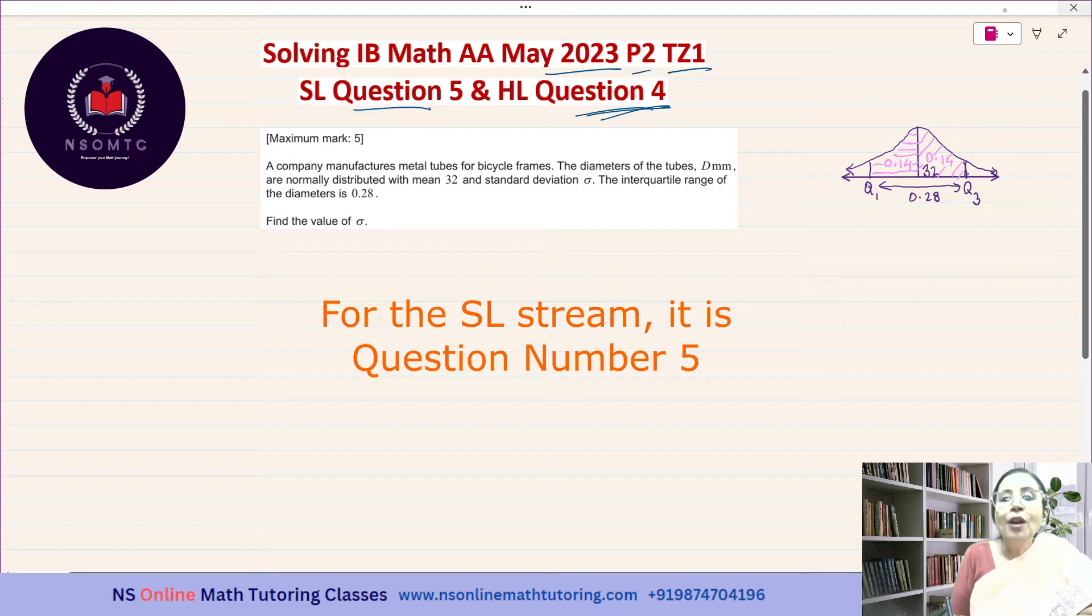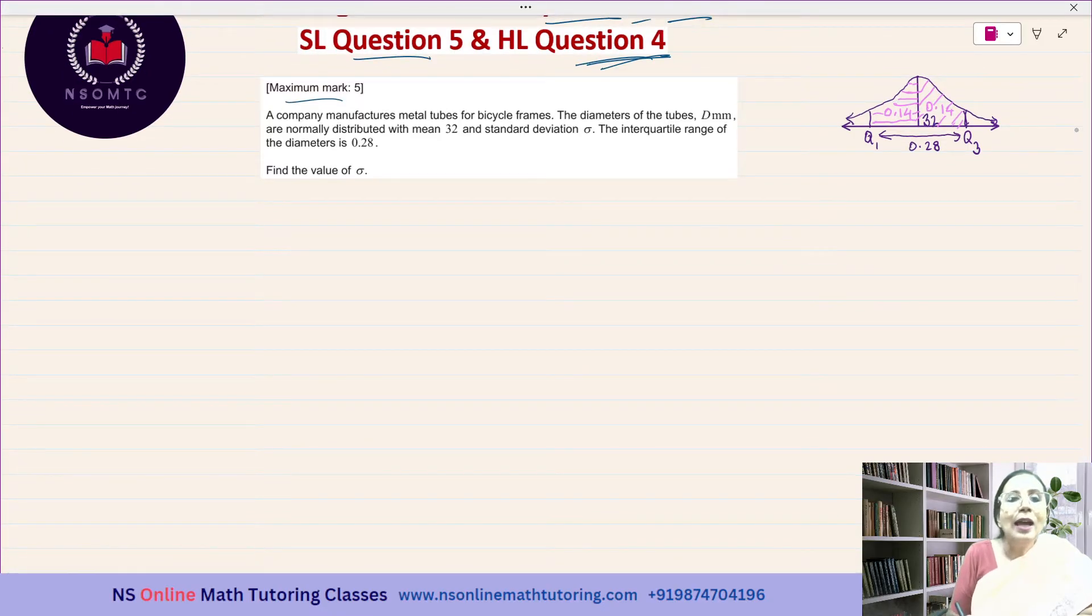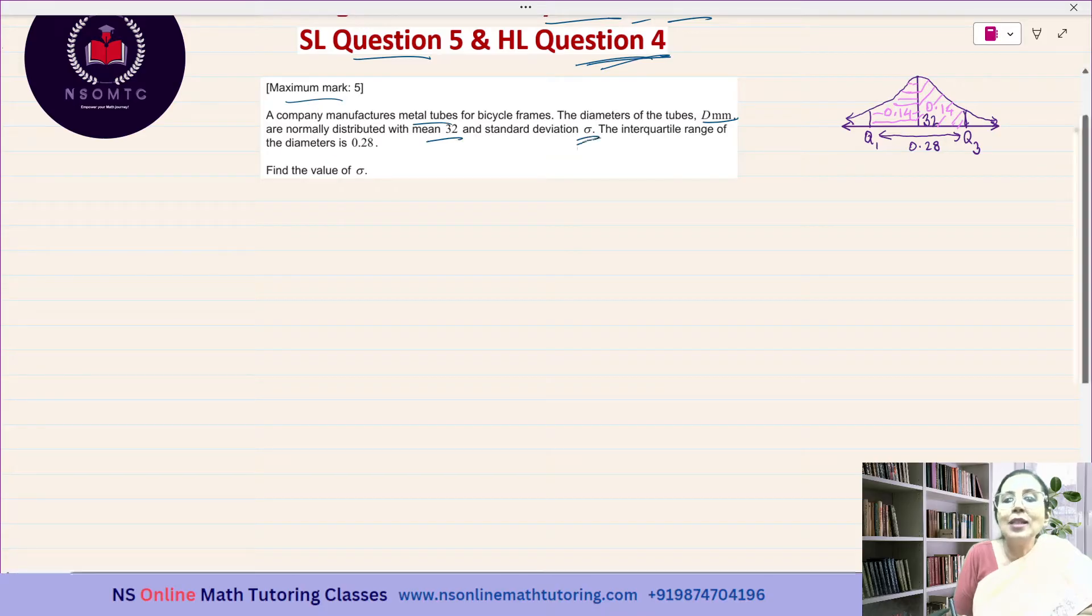For the SL stream it is question number 5, and for the HL stream it is question number 4. So without any further delay, let us start. The maximum mark is 5. The question says: a company manufactures metal tubes for bicycle frames. The diameters of the tubes, d millimeters, are normally distributed with mean 32 and standard deviation sigma.